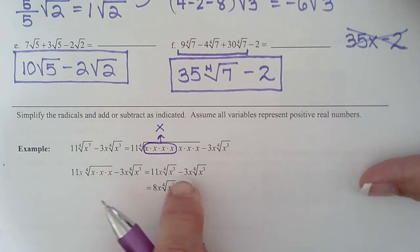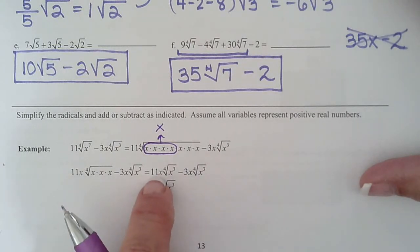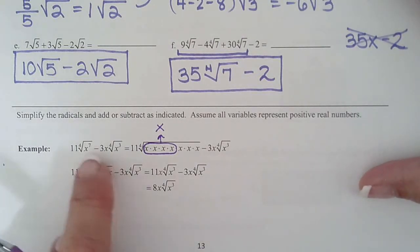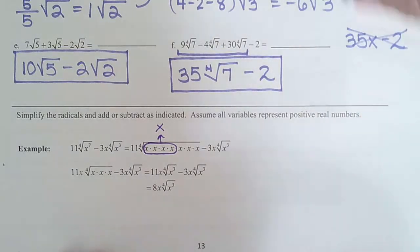Now we have to look and see are they like terms. So are the terms out in front alike? Yes, they're both x. Are the radicals alike? Fourth root, fourth root, yep. X cubed, x cubed, yep. So subtract your coefficients. 11x minus 3x is 8x. And then tack on the radical. Fourth root of x cubed. So that's not so bad, right? That's why I said if you've done 6-3 and learned how to simplify radicals, this is what you're doing for this whole problem.